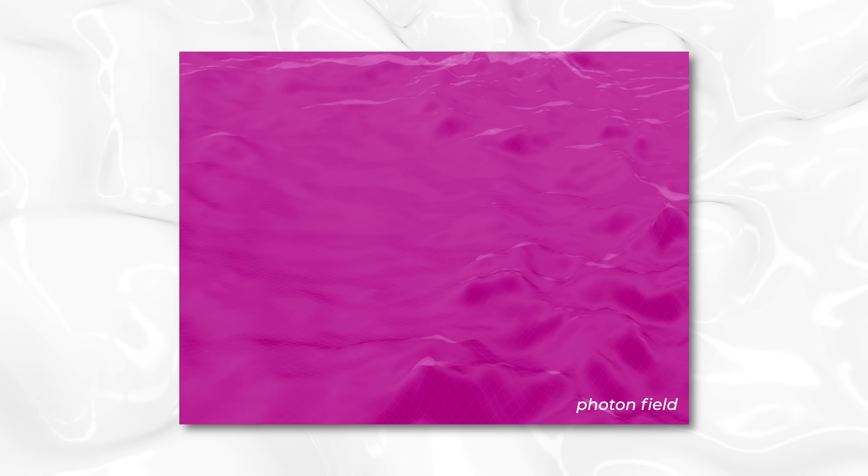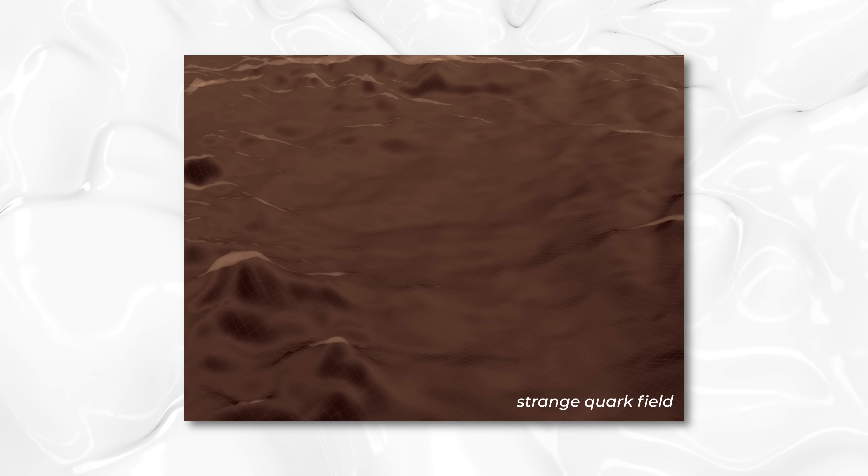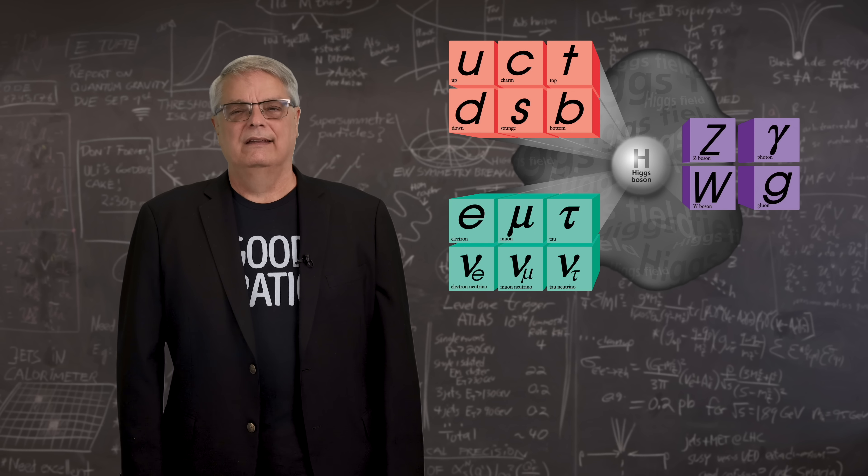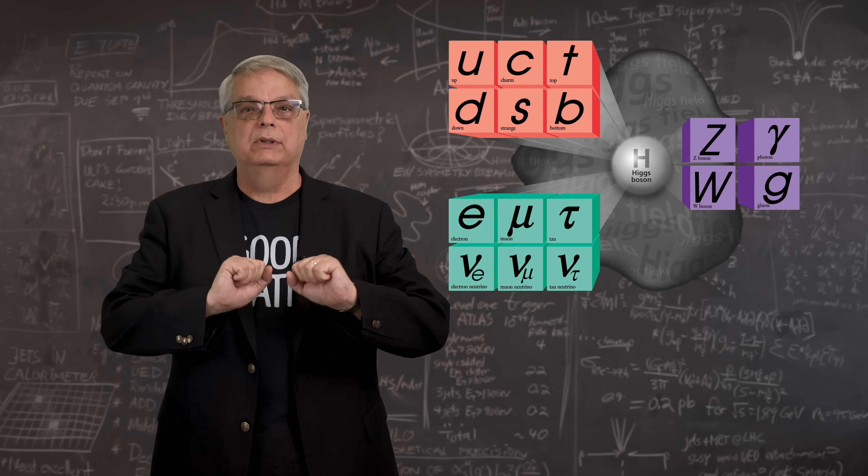The gist of all these QFTs is that empty space isn't actually empty. It's filled with fields. It has an electron field, a muon field, various quark fields, a photon field. In fact, there's a field for all of the known particles of the standard model. You might have seen this graphic that lists the known particles. That sounds super complicated, but let's start simple.